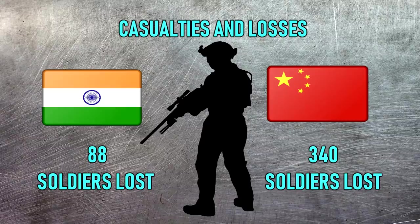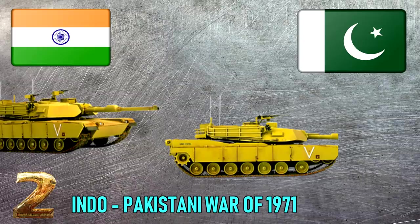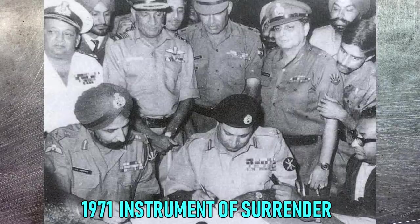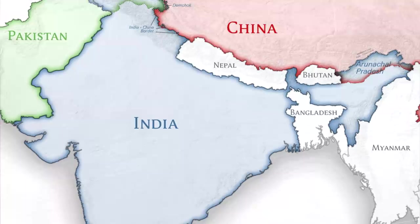Number two: the Indo-Pakistani War of 1971. During the war, Indian and Pakistani militaries simultaneously clashed on the eastern and western fronts. The war ended after the Eastern Command of the Pakistan military signed the instrument of surrender on 16 December 1971 in Dhaka, marking the formation of East Pakistan as the new nation of Bangladesh.